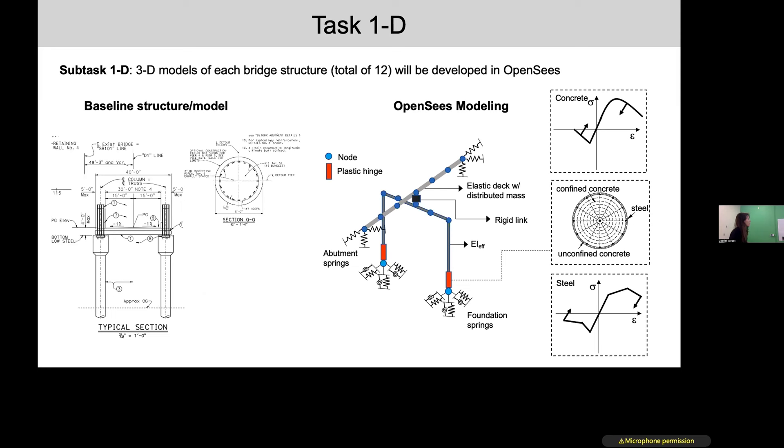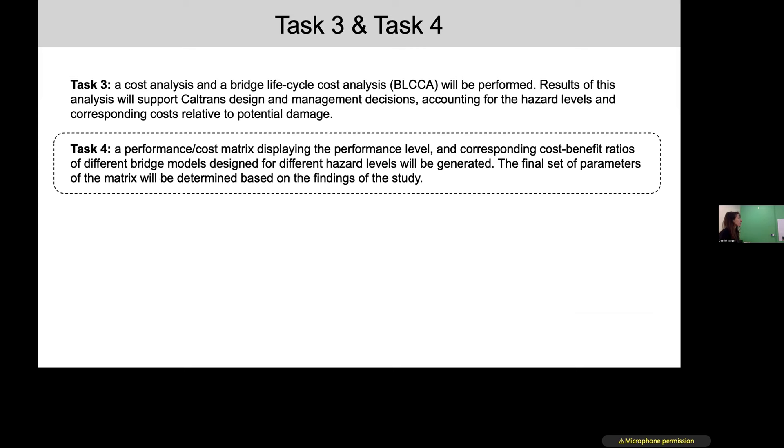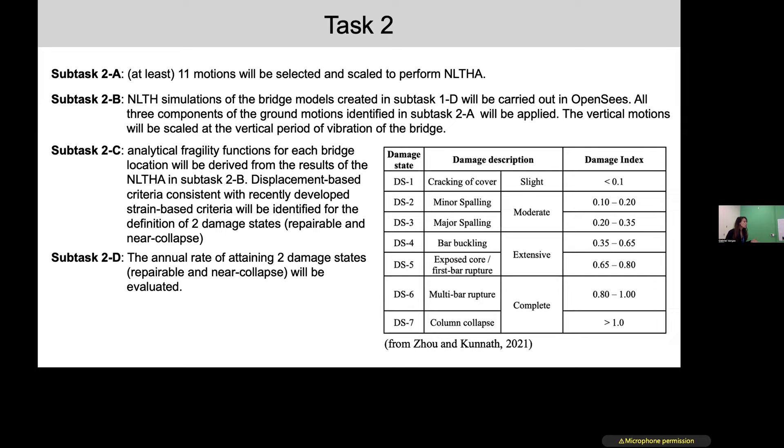Moving to Task number two. Once we have this full library of OpenSees models, we utilize those models to perform fully nonlinear time history analysis. This will apply both the horizontal components of the motions as well as the vertical. The objective is to generate analytical fragility functions for each bridge. The attainment of different damage states will be evaluated based on strain-based criteria that have been recently developed by Professor Kunath and his student. We will also try to develop some consistent damage criteria based on displacement, so displacement-based criteria consistent with the strain-based criteria. We will focus on two specific damage states: repairable and near collapse damage states.